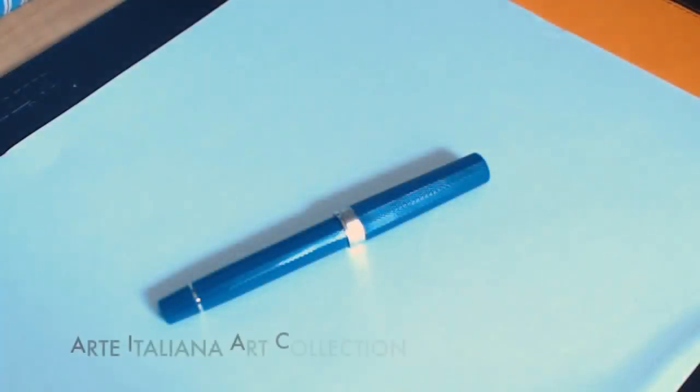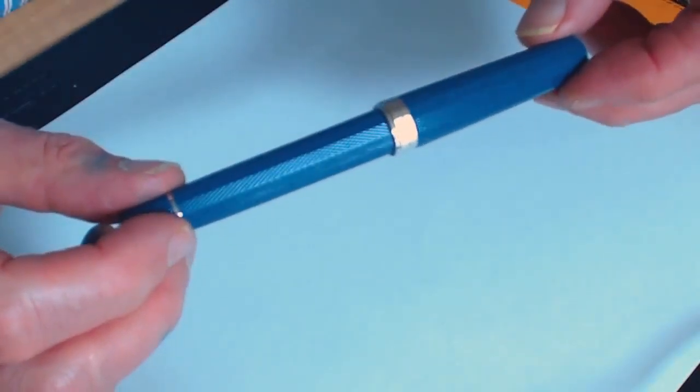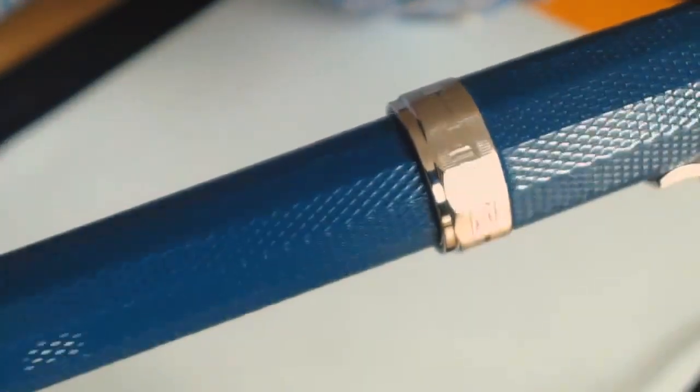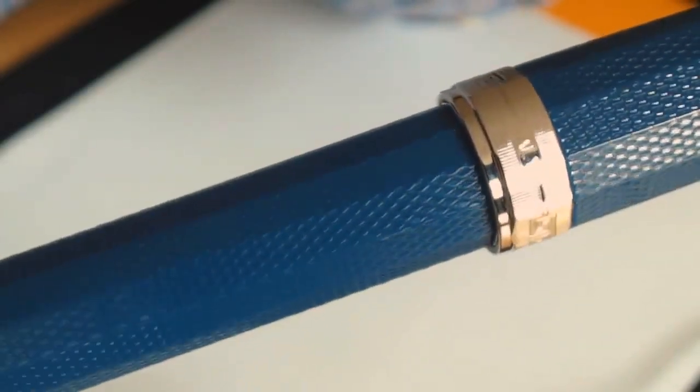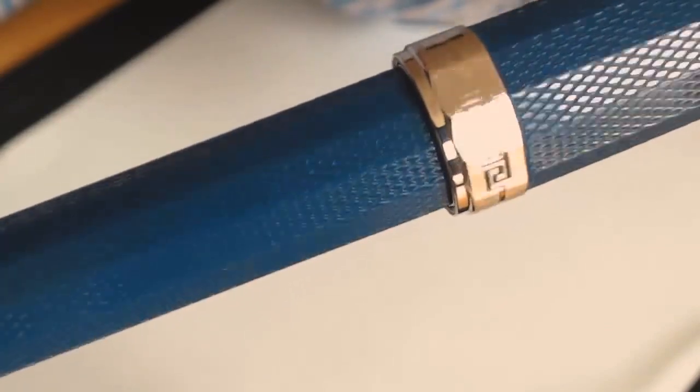Here we are with the Omas Arte Italia art series fountain pen. It's the same size and shape as the classic Milord, but you'll notice there's this rather attractive geloche pattern on it, and there's been some really nice work done around the band. Hopefully you can see that there and see the attention to detail on it. Really nice looking.